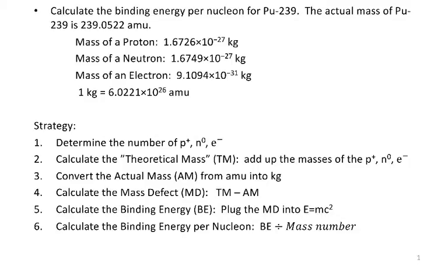To get the binding energy, we'll take the mass defect and plug it in for the mass in E = mc². And the last step, to get the binding energy per nucleon, we take the binding energy from step five and divide it by the number of nucleons, which is the same as the mass number.